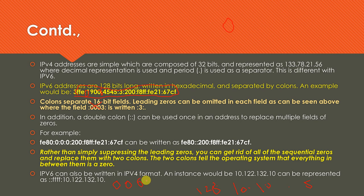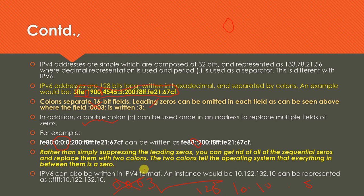An important point: you can always ignore leading zeros in an IPv6 representation. For example, if you have 0003, you can drop the three leading zeros and just write 3. Additionally, a double colon can be used to replace multiple consecutive fields of zeros. For example, if you have FE followed by several groups of zeros, you can replace those zero groups with a double colon. This tells the operating system that everything between the double colons is zero. Double colon can cover zeros from one point to another in the address.